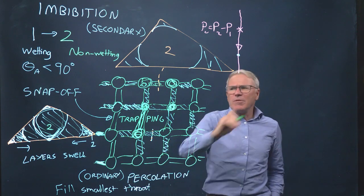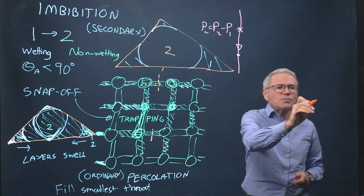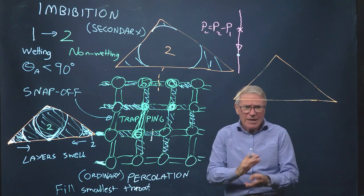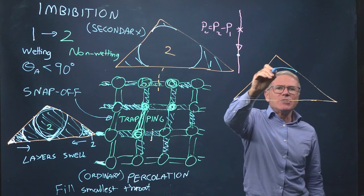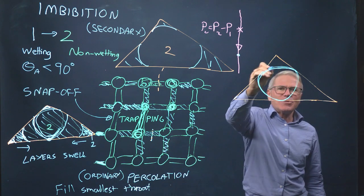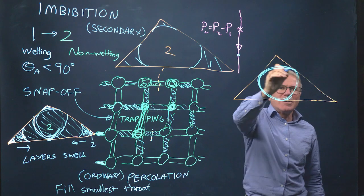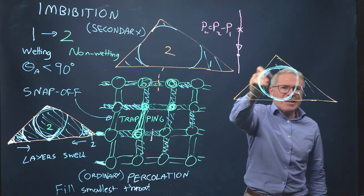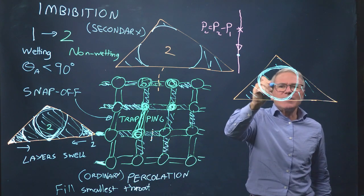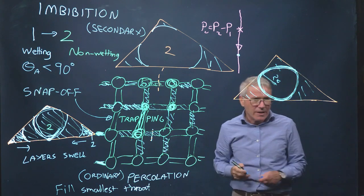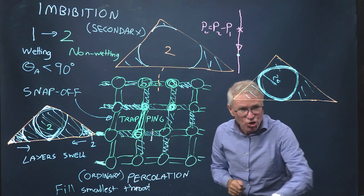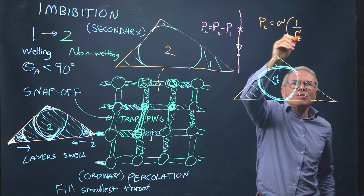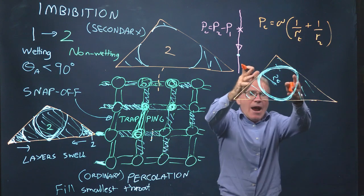What is the capillary pressure for the snap-off process? Let's draw a triangle and assume for the sake of argument the contact angle is zero — completely wetting. The critical moment is when I can draw a circle in the pore space, and the critical point is when I can draw the largest inscribed circle. This is defined as the throat radius r_t. So the radius of curvature is r_t. Going back to the general form of the Young-Laplace equation, P_c = sigma × (1/r_1 + 1/r_2), where r_1 is clearly the radius of the throat and r_2 is the radius of curvature out of the plane of the board.